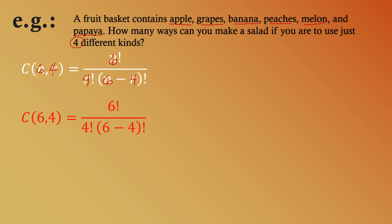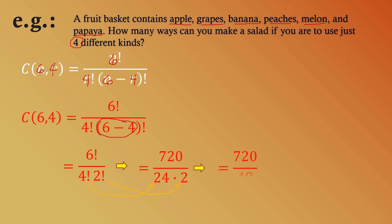Simplifying the terms inside the quantity: 6 minus 4 gives us 2, so we have 6! divided by 4! times 2!. Computing: 6! equals 720, 4! equals 24, and 2! equals 2. Multiplying the denominator: 24 times 2 equals 48. So 720 divided by 48 gives us 15. Therefore, there are 15 ways to make a salad using just four kinds from the given set.